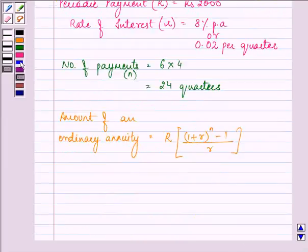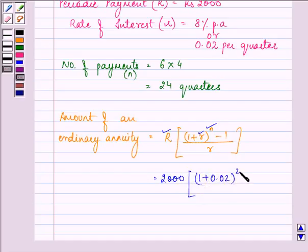What we need to do is just fill up these three values and then solve it. It is 2000 multiplied by (1 plus 0.02) raised to the power 24 minus 1, upon 0.02.